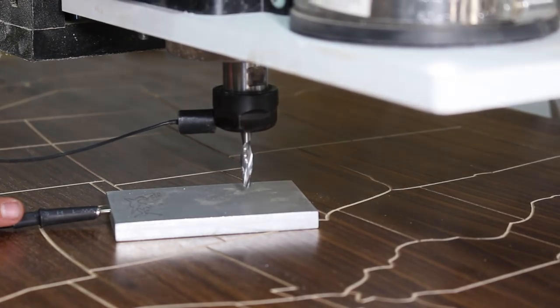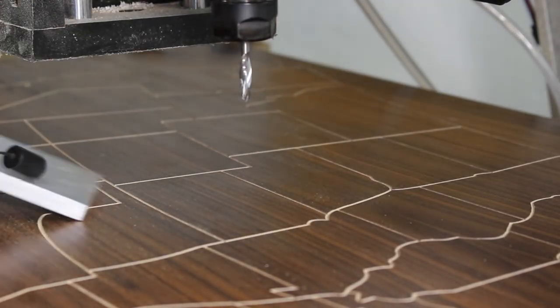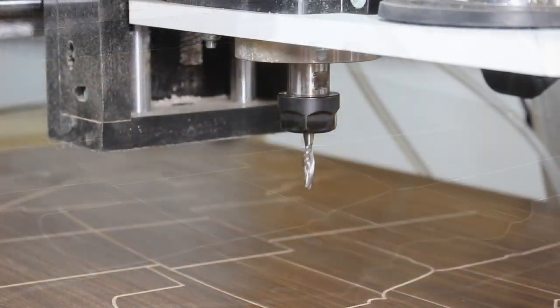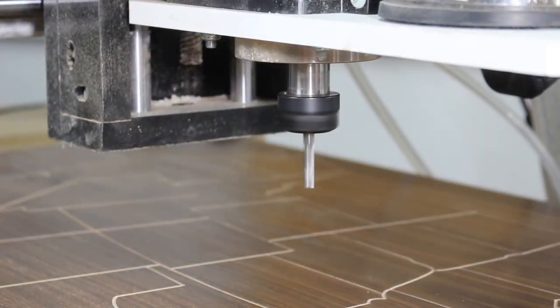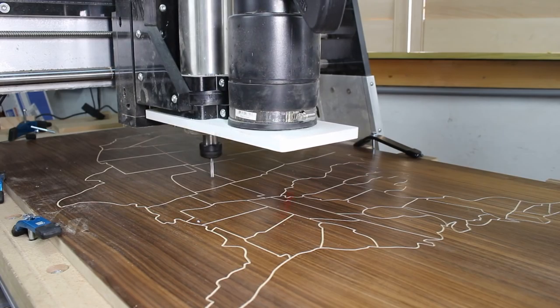Once the work with the V-bit was completed, I installed the 1 1/4 inch spiral bit and used the Z0 touch plate to re-zero the Z axis. I selected the peg hole program we designed earlier and hit start. It is important to note that the RPM should be decreased a fair bit to prevent burning.